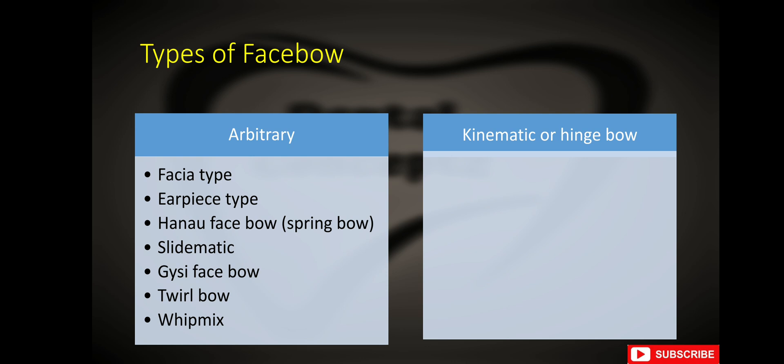What are the different types of face bow? Face bows are of two types: arbitrary and kinematic or hinge bow. Under arbitrary face bow, there are: fascia type, earpiece type, Hanau face bow, slide-matic, Gysi face bow, twirl bow, and whip mix.